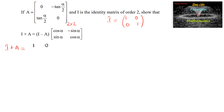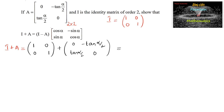Let's consider I plus A, which is equal to the 2×2 identity matrix [1, 0; 0, 1] plus the matrix A given as [0, -tan(α/2); tan(α/2), 0], which is equal to [1, -tan(α/2); tan(α/2), 1].